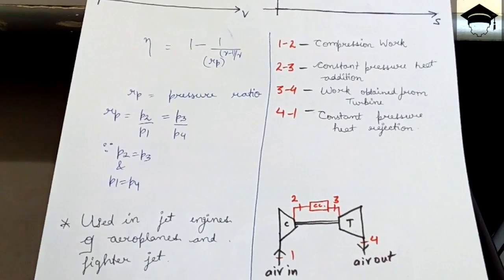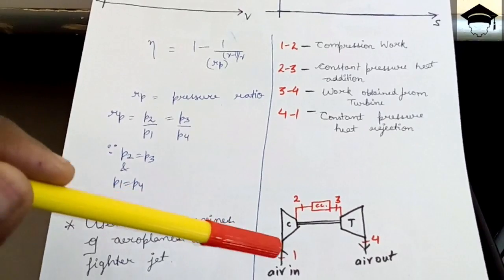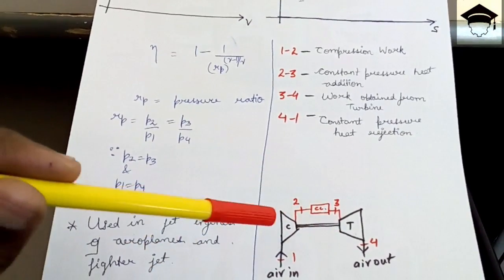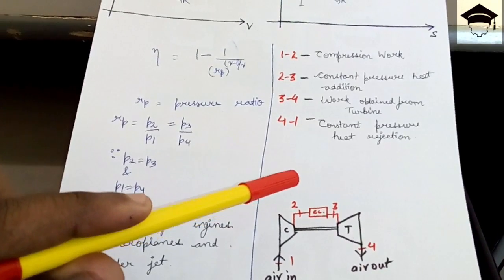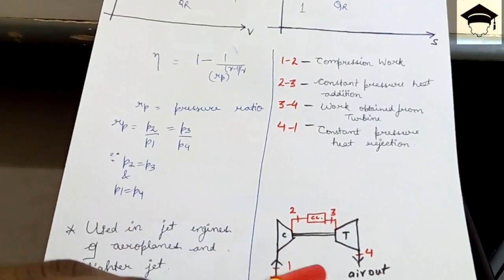And hence in aeroplanes we see large jet engines, so that is this one hole only. It has many series of compressors and turbines and many combustion chambers in which the aviation fuel is used.